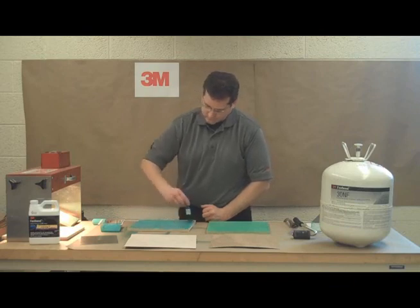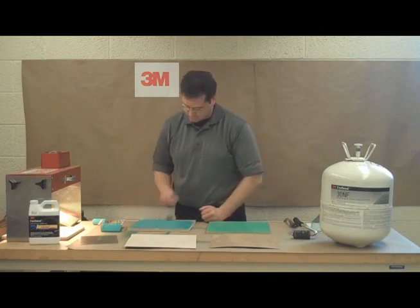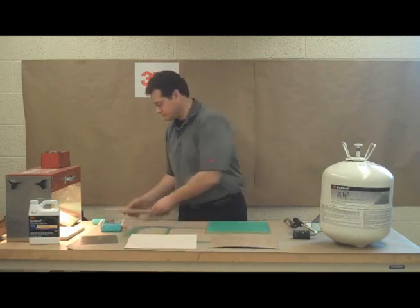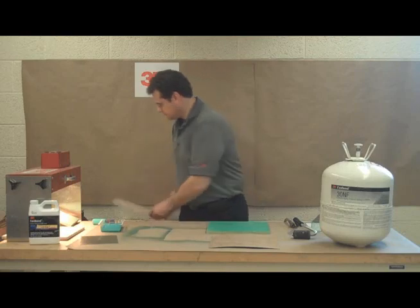As you have just seen, the most efficient way of using Fastbond 30 is spraying, but it can also be brushed and rolled. Fastbond 30 is also available in a cylinder.